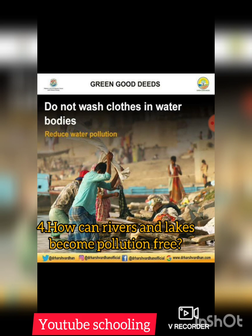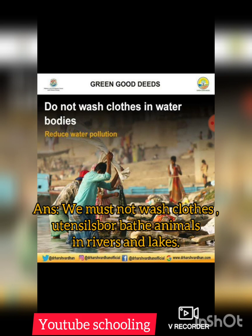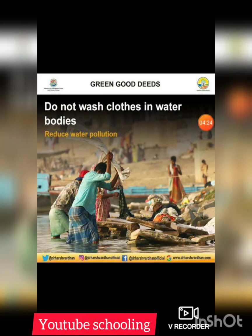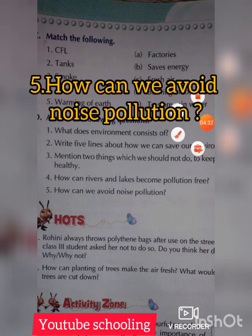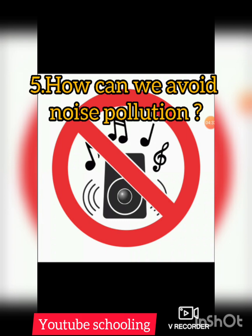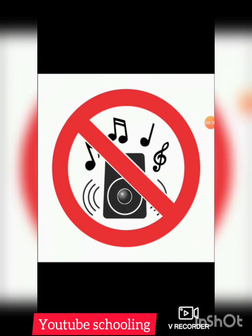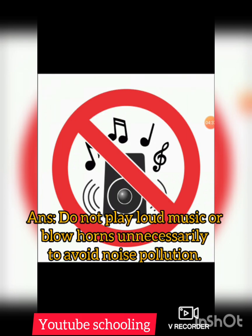Question number four: how can rivers and lakes become pollution free? Answer: we must not wash clothes, utensils, or bathe animals in rivers and lakes. Question number five: how can we avoid noise pollution? Answer: do not play loud music or blow a horn unnecessarily to avoid noise pollution.